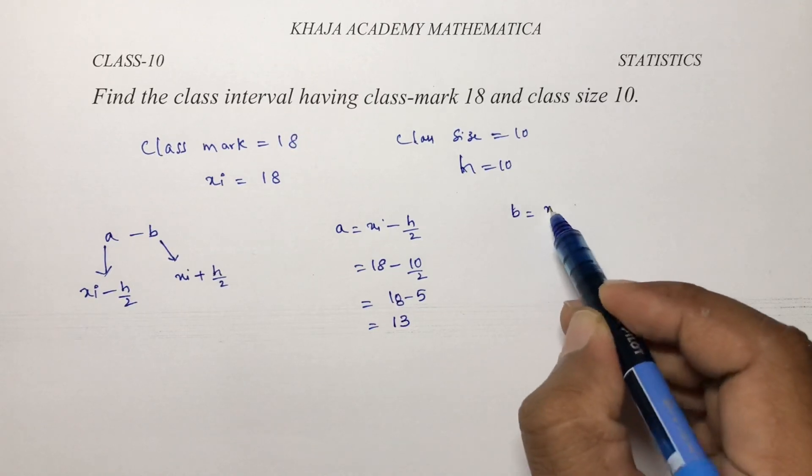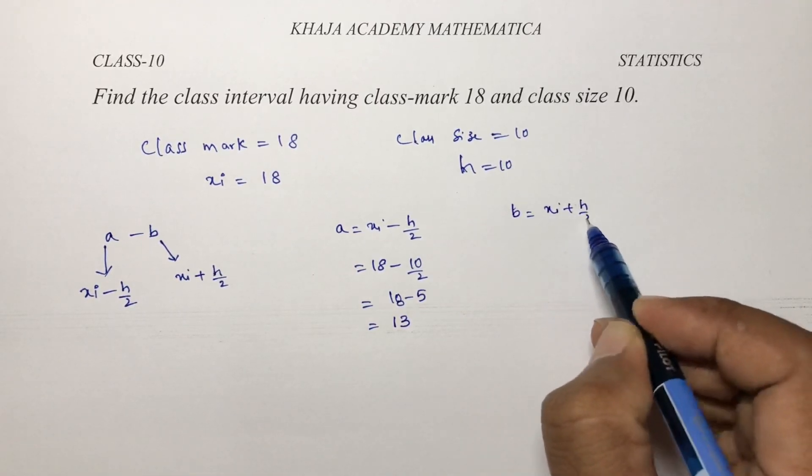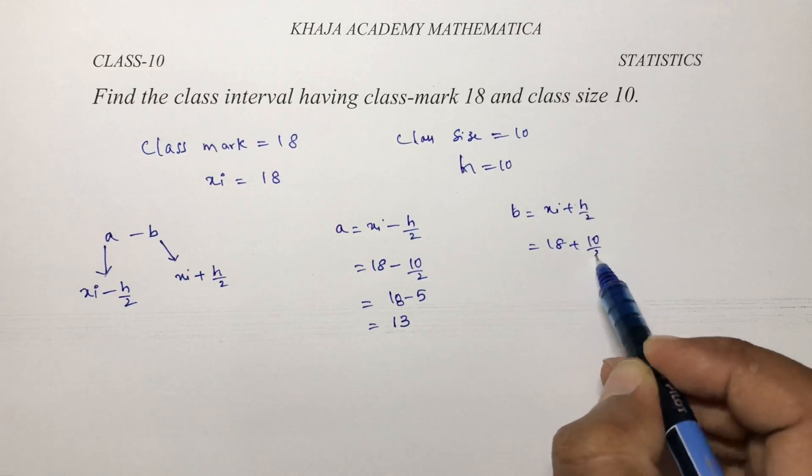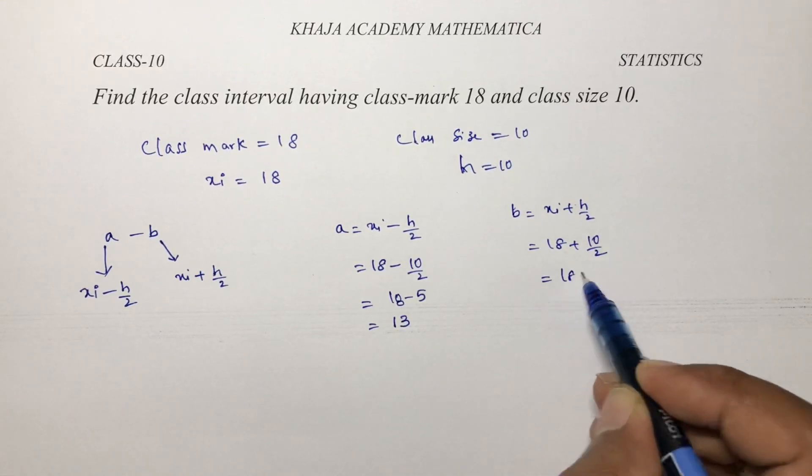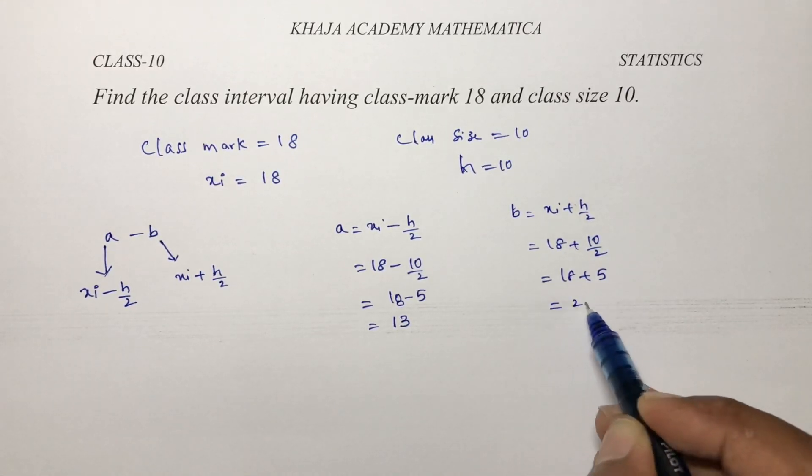Now, to find b is xi plus h by 2. So 18 plus 10 by 2, which is 18 plus 5, which is nothing but 23.